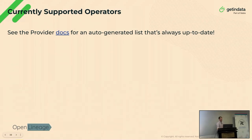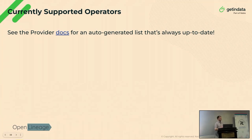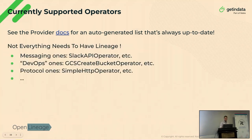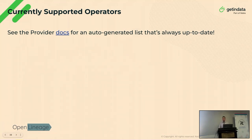You're probably thinking: are the operators you use supported out of the box? You can check that in the docs — there is auto-generated documentation that lets you see all supported operators. For operators that are not supported, you will still receive Open Lineage events, but they may lack some input/output dataset information. When you look at the docs, there are about 20 or 30 supported operators. But not everything needs lineage — we only need it for data operators that actually do processing and move data around.